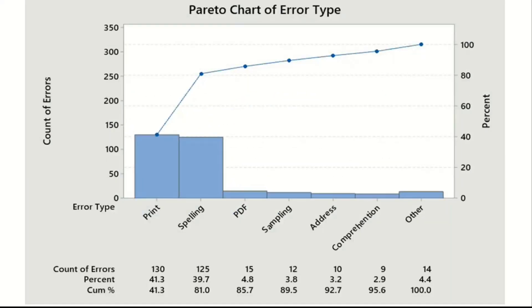How does a Pareto chart look? On the left-hand side you will see the count of errors, and on the right-hand side you will see the percentage contribution of these errors.